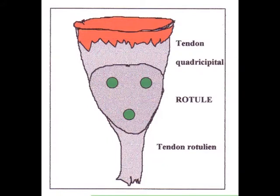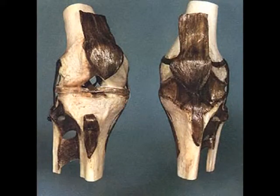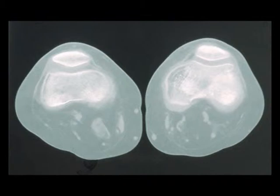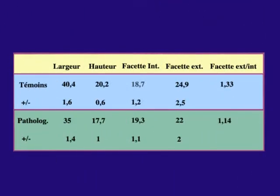Comme tous les sésamoïdes, la rotule prend naissance à l'intérieur d'un tendon — en l'occurrence le tendon quadricipital. L'ossification de cet os se réalise suivant plusieurs points qui convergent au cours de la croissance pour former un massif osseux antérieur solide, dont la face postérieure est recouverte d'un cartilage d'encroûtement. Les recherches menées chez l'homme moderne ont montré que la rotule était programmée de façon génétique. Une étude d'une population de jeunes enfants handicapés, incapables de marcher pour diverses raisons neurologiques, a confirmé la présence de cet os chez tous les sujets. La scanographie pratiquée chez ces enfants de 11 à 16 ans montre dans tous les cas une double aplasie portant sur la trochlée et la rotule.